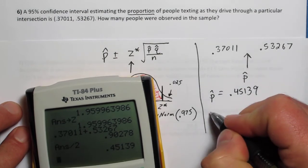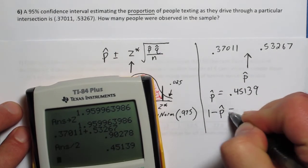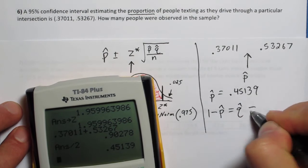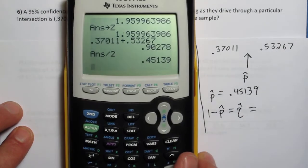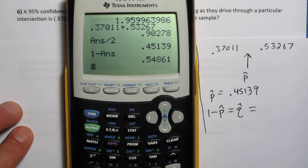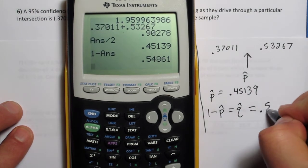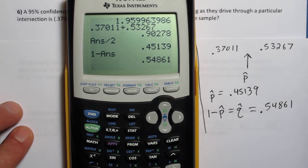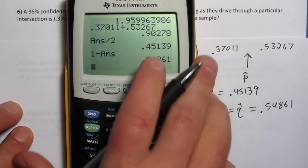That's what p hat equals. So to get q hat, 1 minus p hat is what q hat is. So in this case, q hat is 0.54861. Alright, let's plug in all of our values and see what we get.